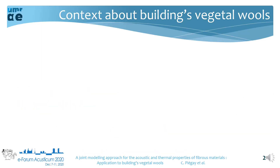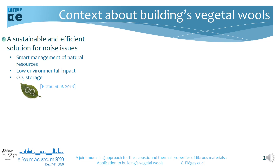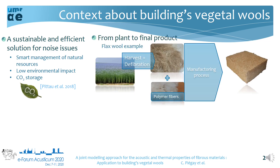I'll begin by introducing a brief context concerning vegetal walls and their specific characteristics. In the green building field, these biobased materials contribute to a smart management of natural resources with a low environmental impact. They also have the advantage of storing carbon dioxide, which is the main greenhouse gas responsible for global warming. Vegetal walls are characterized by a number of variability factors — for example, the harvest period and the defibrillation quality can lead to large variability in vegetal fiber radii.